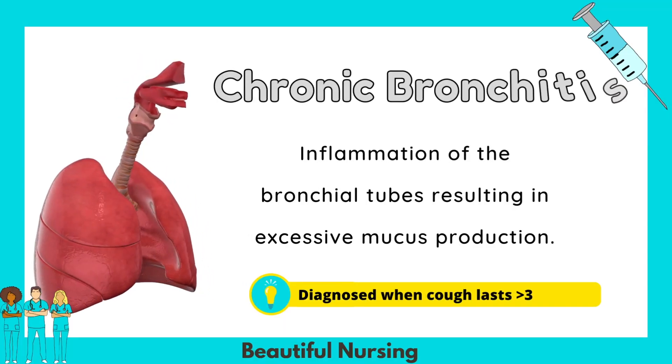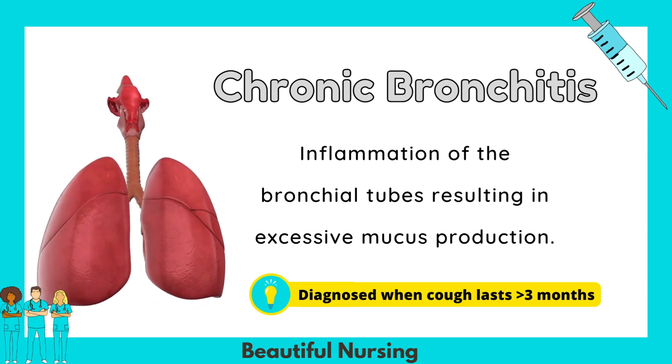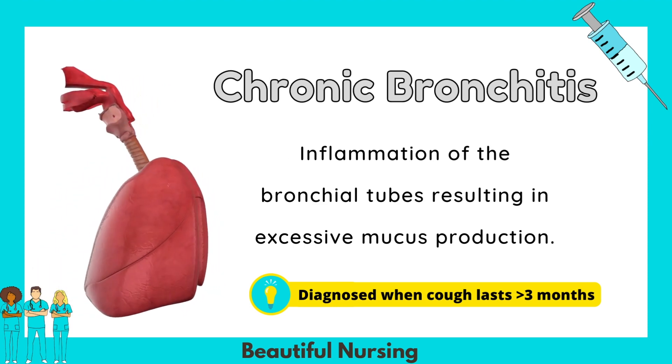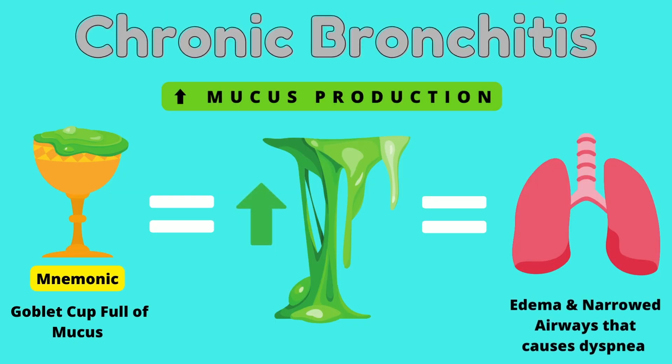So what is chronic bronchitis? Chronic bronchitis is a disorder of excessive mucus production due to inhalation of an irritant like cigarette smoke. The congestion in chronic bronchitis can be due to an increased number of goblet cells that work to enlarge mucus glands, which increases mucus production and causes edema and narrowing of the airways.